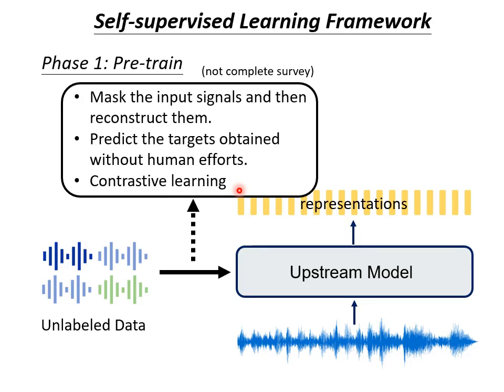The most interesting part is that when we do this pre-training for downstream tasks, the pre-training is task agnostic. This means that when we are doing the pre-training, we did not know what kind of downstream task the upstream model will be fine-tuned on. During training, we only use a bunch of unlabeled data to train the upstream model. In today's talk, we will apply the model trained in phase 1, called the upstream model. You may notice that it has many names in the literature, such as self-supervised model, and a popular term recently called foundation model, which also refers to the upstream model.